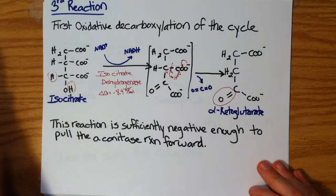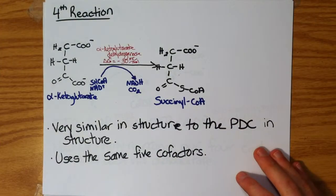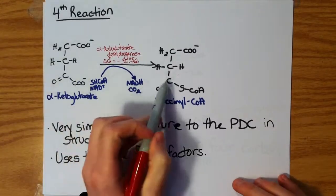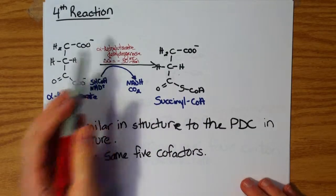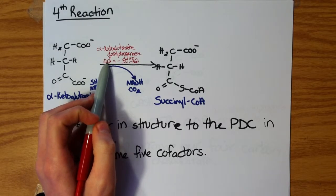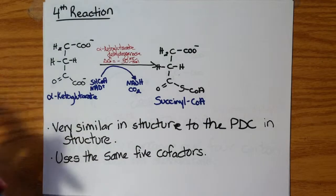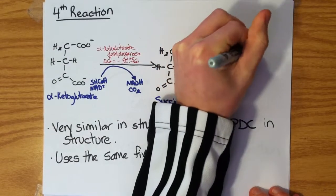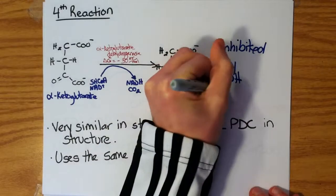So this is our first oxidative decarboxylation. We have now converted a 6-carbon compound into a 5-carbon compound. The fourth reaction will undergo another oxidative decarboxylation — the last one — to reform a 4-carbon compound. That is the conversion of alpha-ketoglutarate into succinyl-CoA by alpha-ketoglutarate dehydrogenase. This reaction has a highly negative ΔG°' value of -30, so it is also regulated and inhibited by NADH as well as ATP.